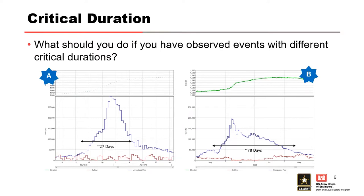Our first example of sensitivity analysis is critical duration. What if we have multiple driving storm mechanisms for a project? These two hydrographs represent two types of extreme storm mechanisms within the same watershed occurring during different seasons: spring and summer. Typically, rainfall storm mechanisms have critical durations on the order of days to a week, while rain-on-snow mechanisms often have critical durations of weeks to a month or multiple months. This particular basin is very large, which extends the critical duration.